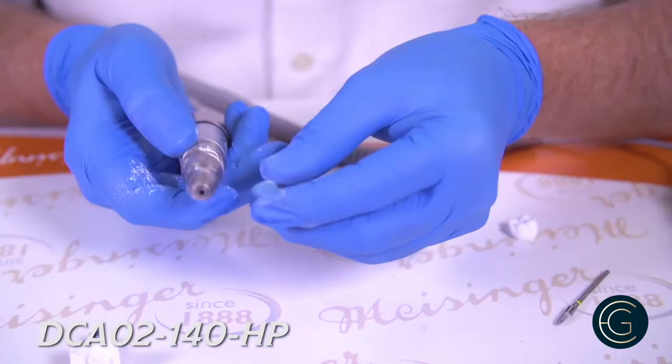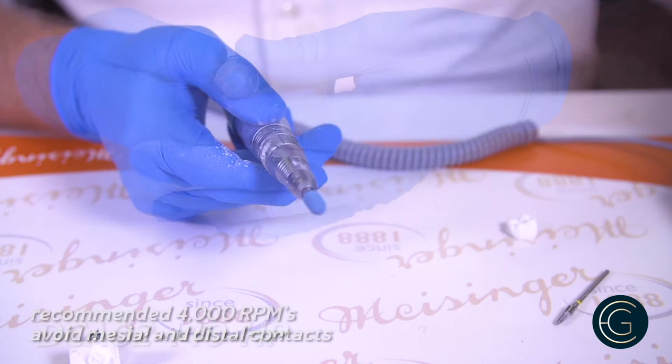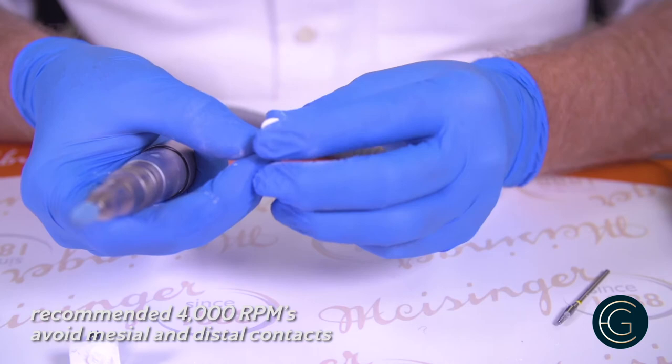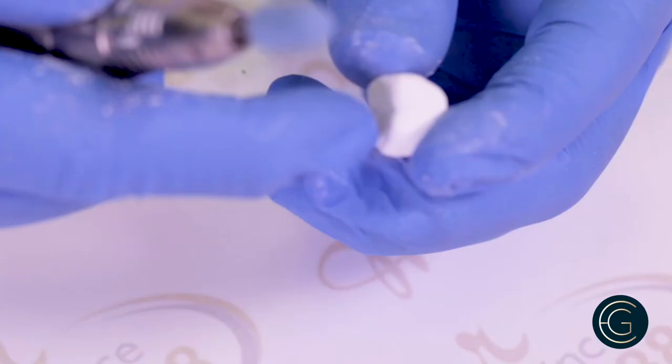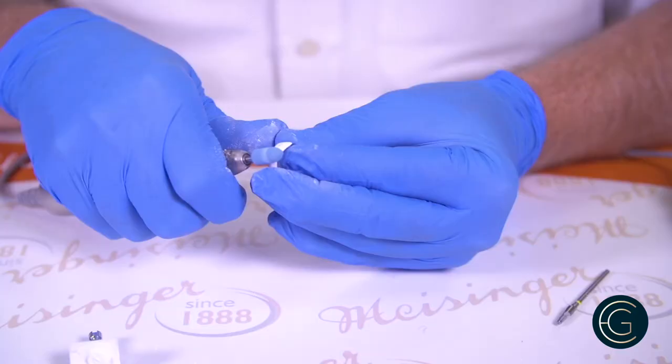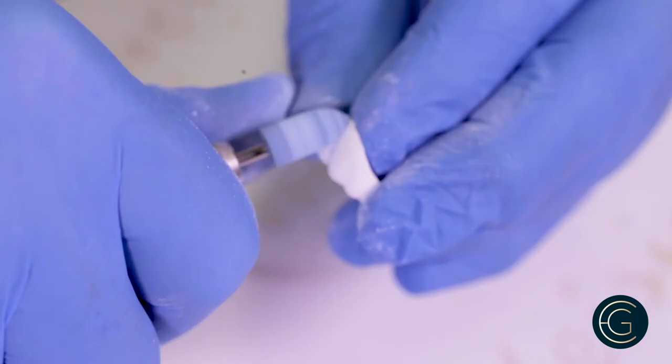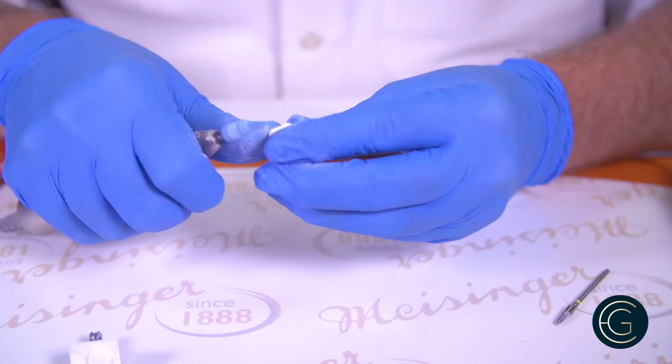Okay, now we're going to go to the DCA02, the 140. This is a medium grit, so we're going to run this down to 4000 RPM. You don't want to go more than 4000 on this. And what you're going to do is you're going to go over all the broad surfaces with this, but you're not going to get your mesial or distal proximal contacts. We're going to come in here and just going to gently start polishing these areas right here. Be careful not to nick my margins.